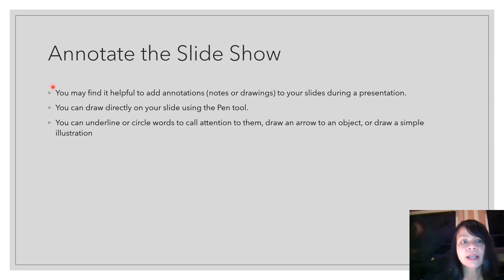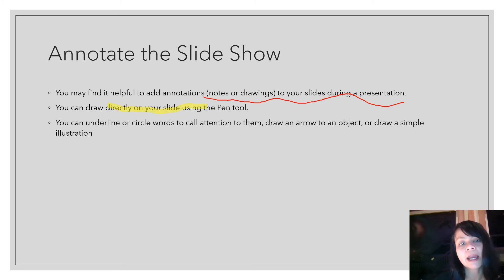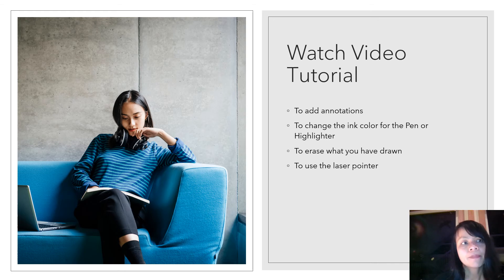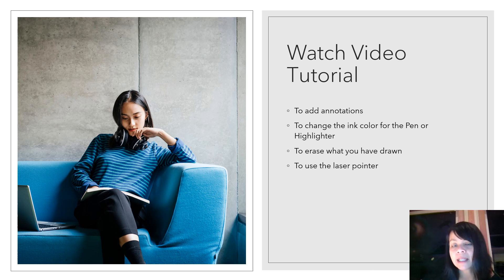You might also want to add annotations to your slideshow. Annotations allow you to use a pen tool to draw on your slide, use a highlighter, underline or circle words, draw arrows, and draw attention to specific content. Please watch the video tutorial on how to add annotations, change the ink color for the pen or highlighter, erase what you've drawn, and how to use a laser pointer.